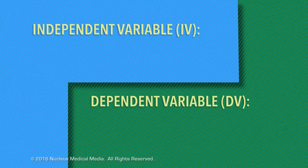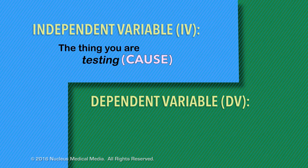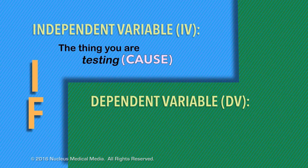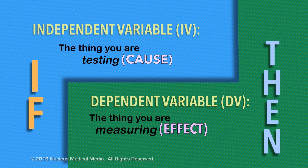To review: the independent variable is the thing that you're testing. Sometimes this is referred to as the cause in an experiment — it is also the 'if' part of your hypothesis. The dependent variable, the thing you're measuring, is the effect. It is also the 'then' part of your hypothesis.